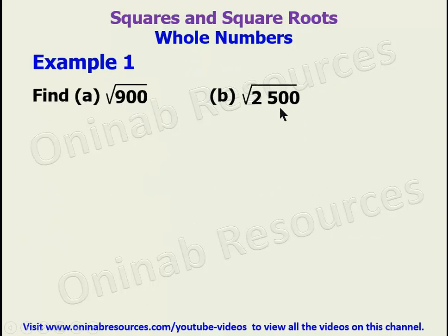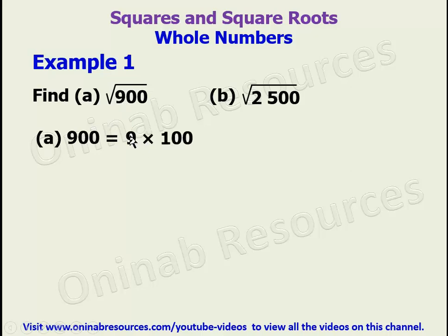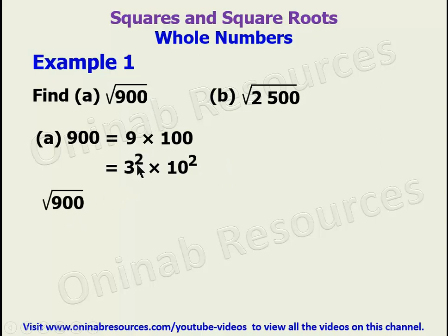We now look at some examples on how to calculate the square root of a whole number. We start with part A: the square root of 900. We write 900 as 9 times 100. Nine is a perfect square — it can be expressed as 3 squared. One hundred is also a perfect square — it can be expressed as 10 squared. So we have 900 as 3 squared times 10 squared. To find the square root, we divide each power by 2, giving us 3 to the power of 1 times 10 to the power of 1.